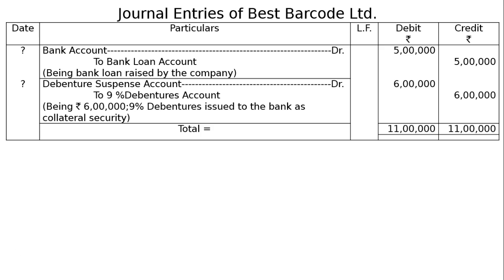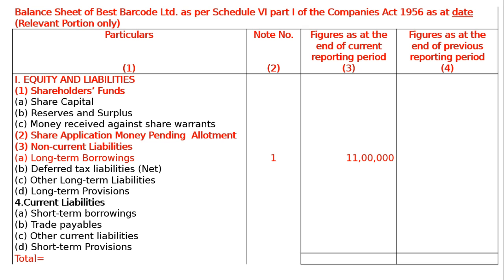After this, we have to show this in the balance sheet. Balance sheet of Barcode Limited as per Schedule 6 Part 1 of the Companies Act 1956, as at date — relevant portion only. You have to write down only the first two lines: liabilities, shareholders funds, and long-term borrowings. Nothing else more, but I have written the entire balance sheet because you have to learn this for the first chapter of volume 3.